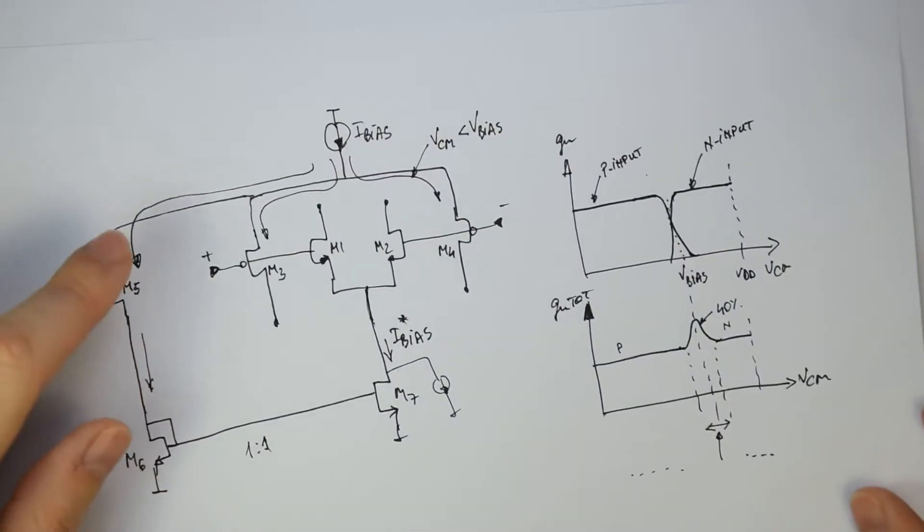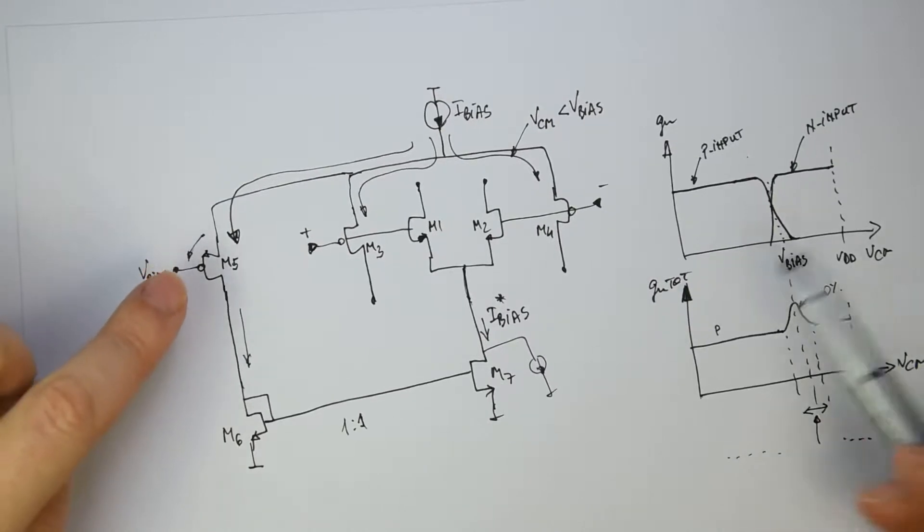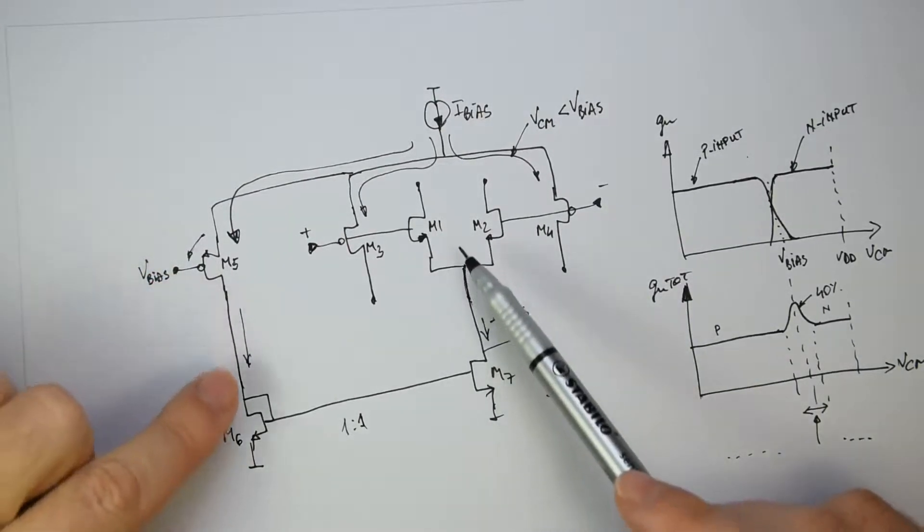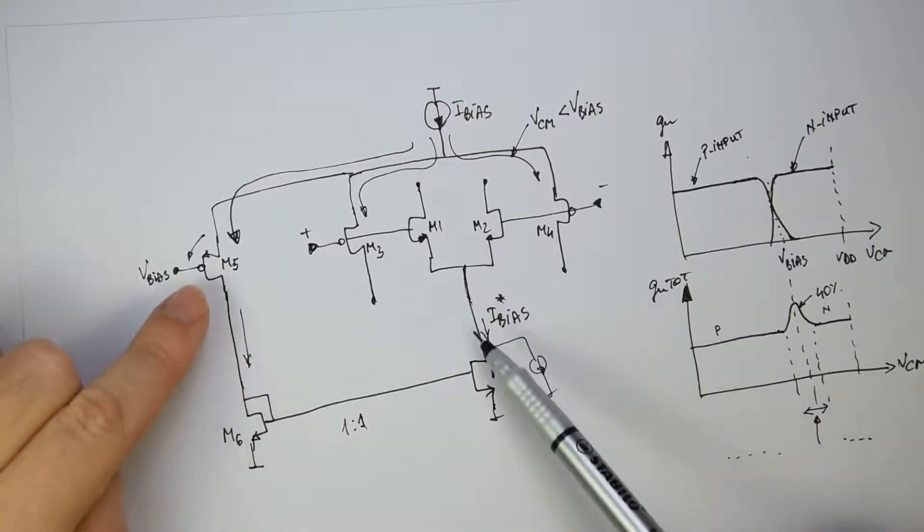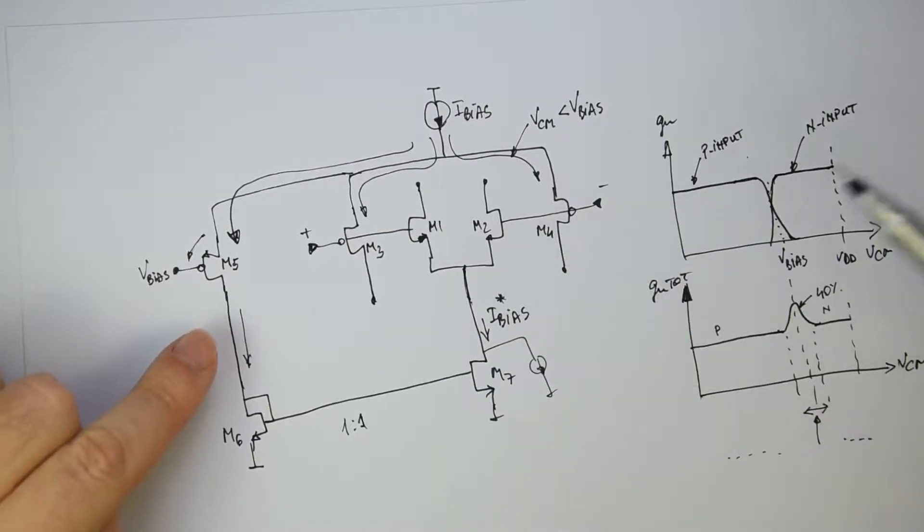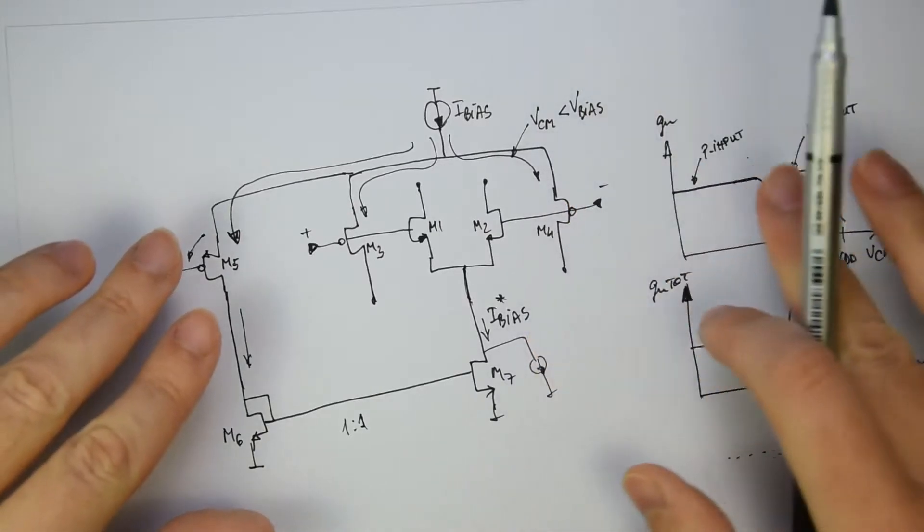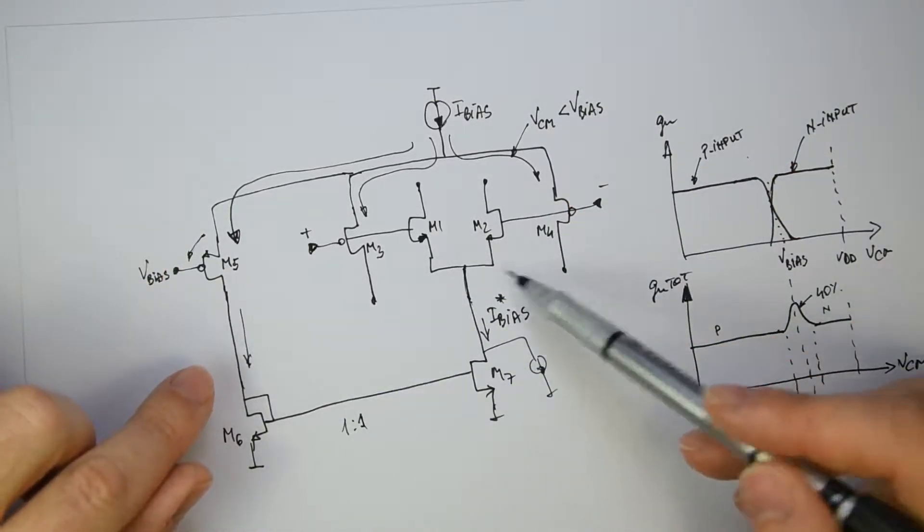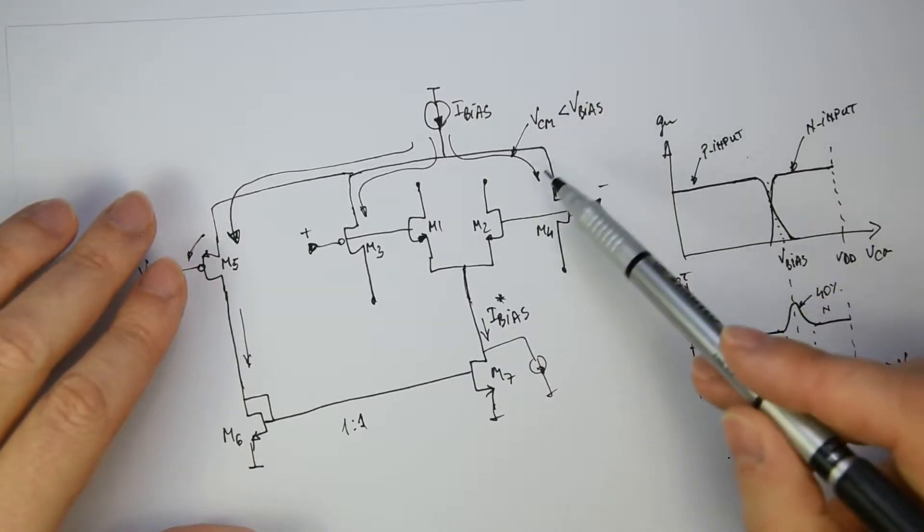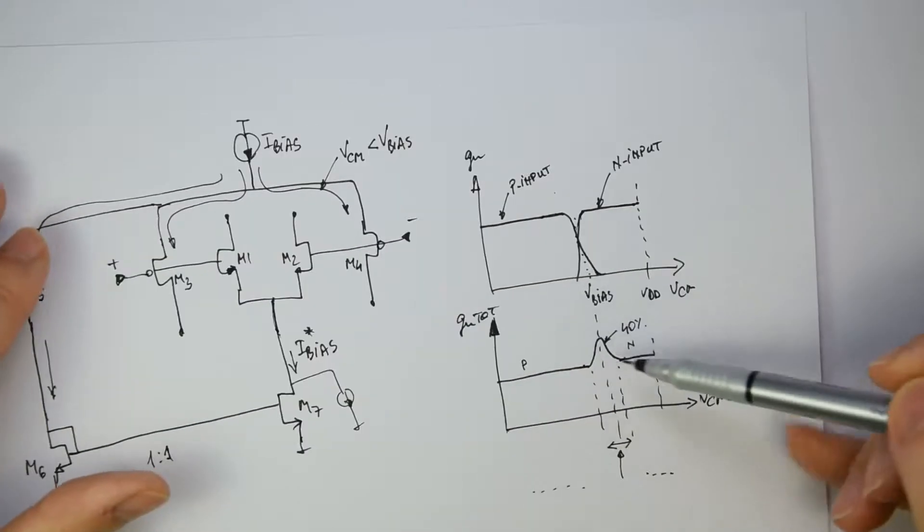And to solve this we should do a kind of replica circuitry that is switching the current from one side to the other exactly in the moment when the main input differential pair is doing that. Which means we will have this schematic but on parallel with that we will build another one that is not used in the normal application, but it's just for our loop to be able to detect this transition moment.